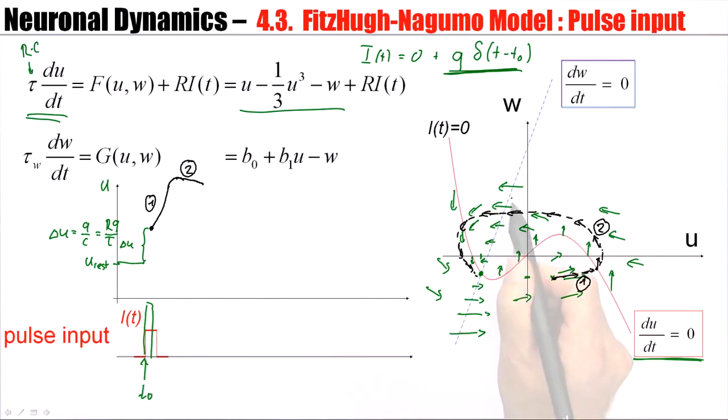Now, here when it crosses the w-nullcline, it's actually fairly big arrows. So the downswing is quick. This will be phase three.